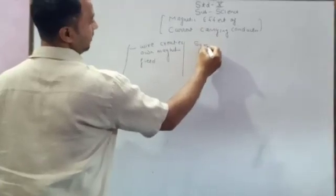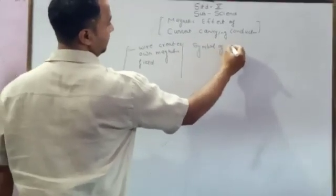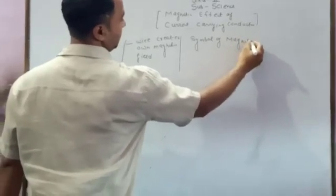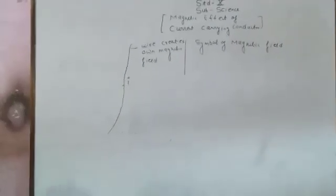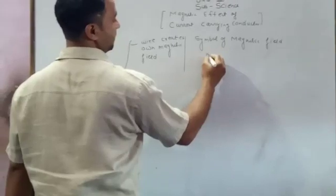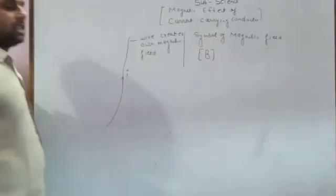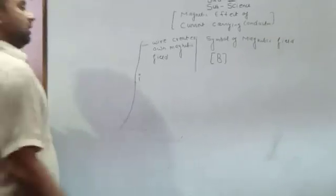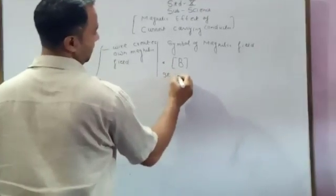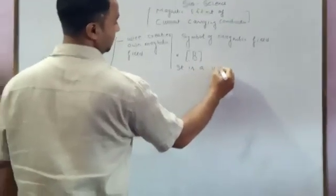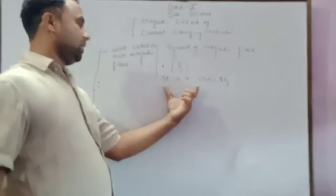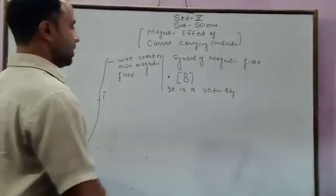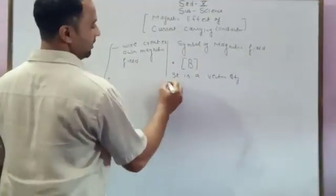The symbol of the magnetic field is B. It is a vector quantity. So we write it as a vector.